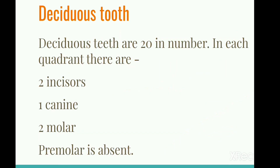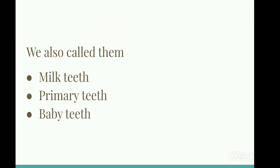Deciduous teeth. Deciduous teeth are 20 in number. In each quadrant there are two incisors, one canine, and two molars. Premolars are absent. We also call them milk teeth, primary teeth, and baby teeth.